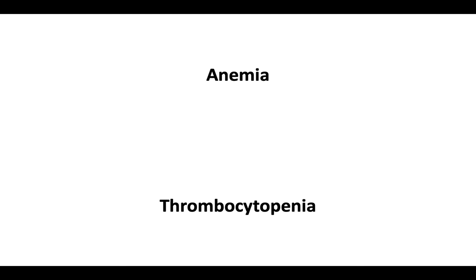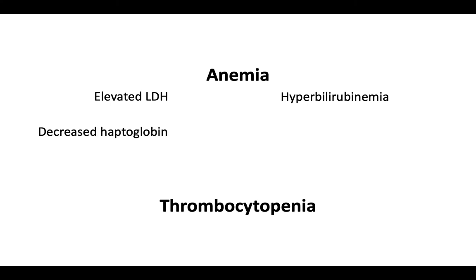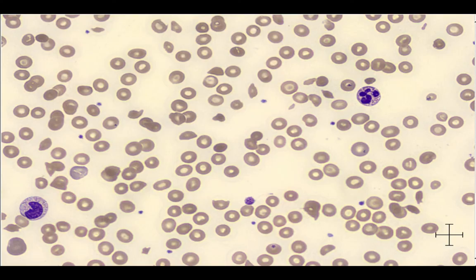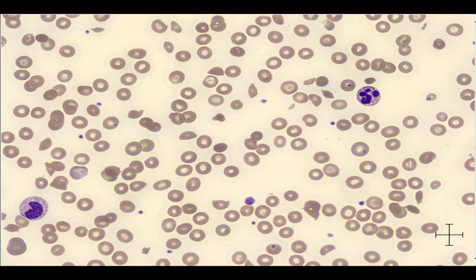Let's discuss the pertinent laboratory findings. You should expect to see thrombocytopenia and hemolytic anemia as demonstrated by elevated LDH, hyperbilirubinemia, decreased haptoglobin, increased reticulocytosis, and, because it is a non-immune-mediated hemolysis, a negative Coombs test. The most important piece of the TTP diagnosis is to evaluate the peripheral blood smear. The blood film will show fragmented red blood cells called schistocytes, including helmet cells and triangular cells. In the appropriate clinical context, a minimum finding of two or more schistocytes per high-power field is enough to confirm your clinical diagnosis.